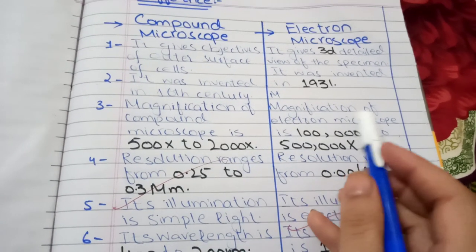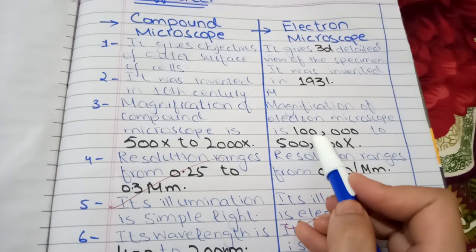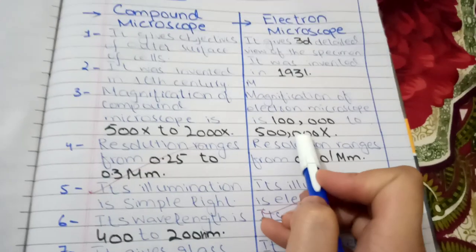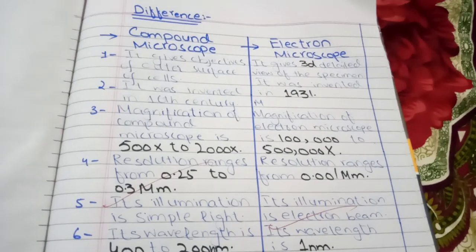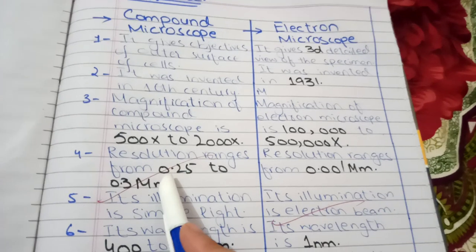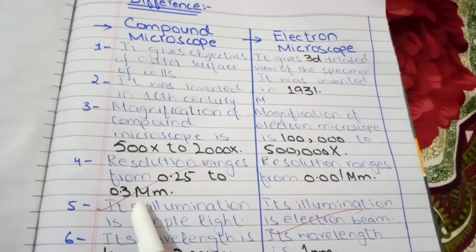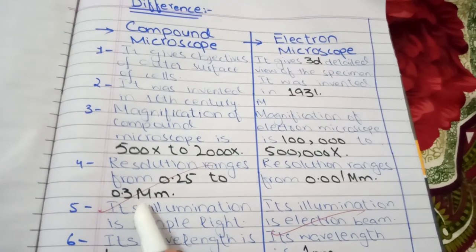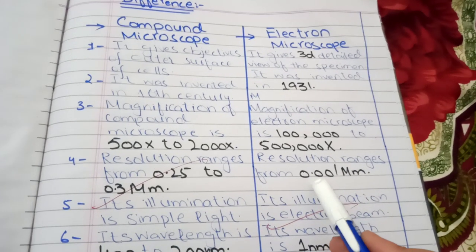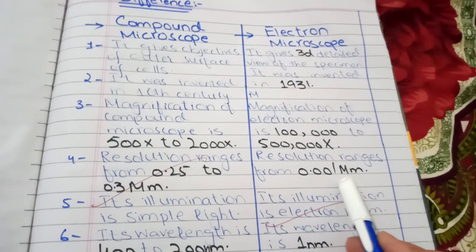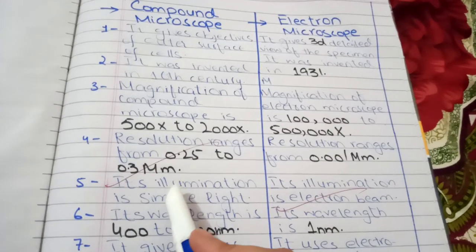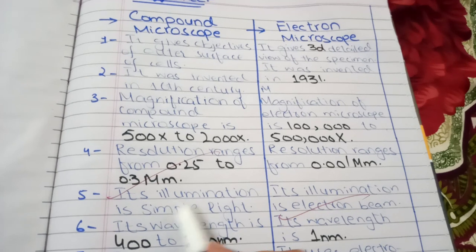the magnification of electron microscope is 100,000 to 500,000x. In compound microscope, resolution ranges from 0.25 to 0.3 mm, whereas in electron microscope resolution ranges from 0.01 mm.